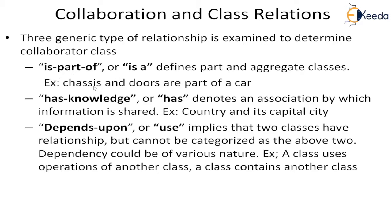The next relation type is 'has knowledge of' or 'has,' which denotes an association by which information is shared. For example, a country and its capital city — every country will have a capital city. Whenever we have these kinds of words, there is a has-a relation between these two classes. The third type is 'depends upon' or 'uses,' which implies two classes have a relationship that cannot be categorized as the above two. Dependency could be of various natures — for example, a class uses an operation of another class, or a class contains another class.